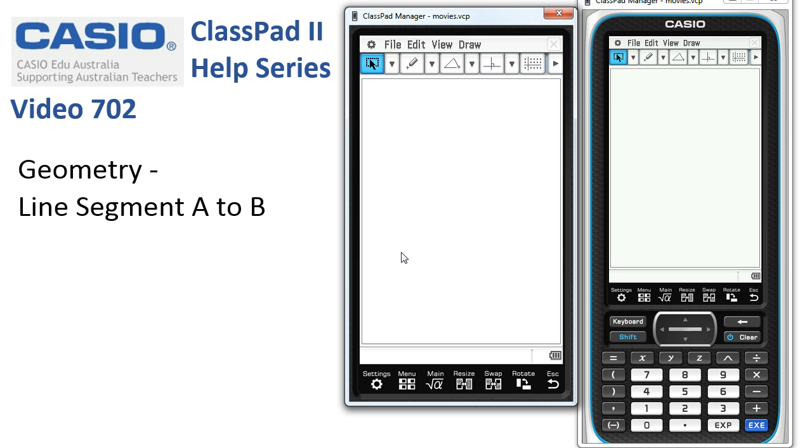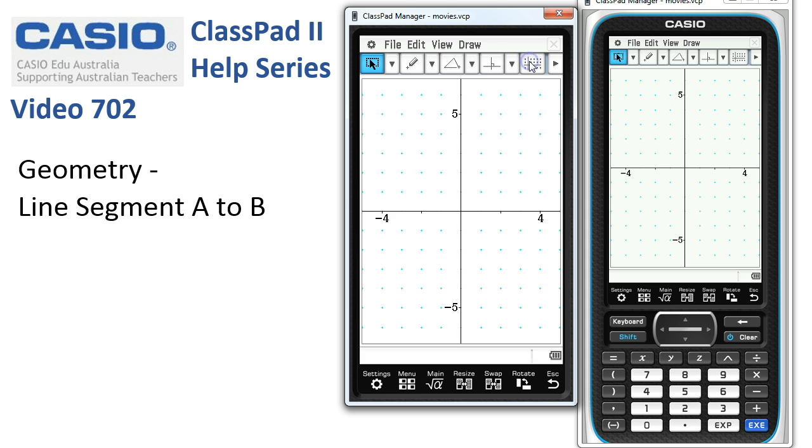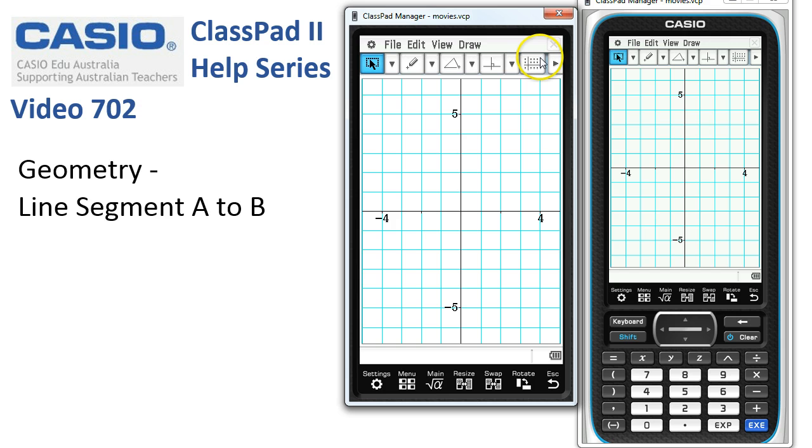The first thing in this instance, because we're going to do some coordinate geometry, is to turn on the axes with scale and also with grid lines. So I'm repeatedly tapping this icon in the top corner until everything we want is there.